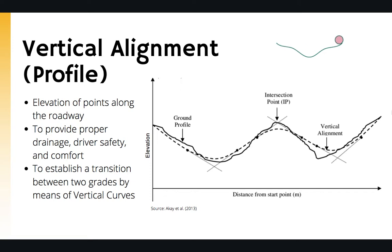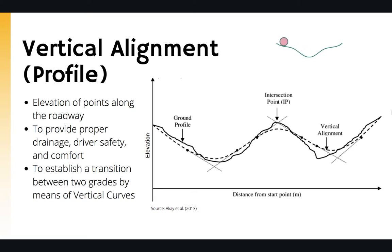Another purpose of the profile or vertical alignment is to connect two tangents or two slopes by means of vertical curves for added safety and riding comfort. In this picture you see an example of a ground profile and a proposed highway profile, including the intersection points and the vertical curves.